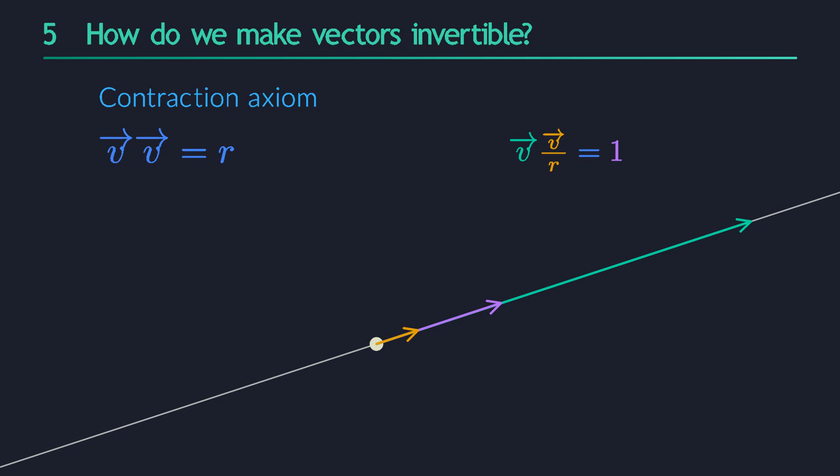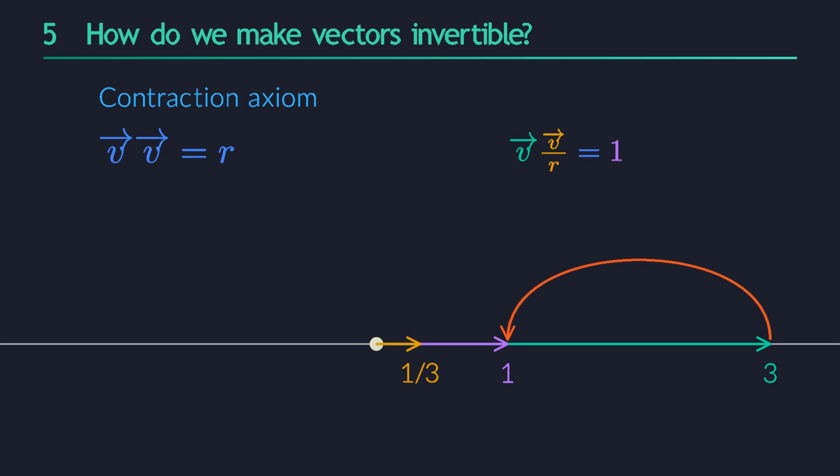But then I thought about it some more, and I realized that this behavior of inverses is actually very familiar. It's exactly how real numbers work. They also stay on a line, the real number line. The inverse of 3 is 1 over 3. If you now think of the number 3 as a one-dimensional vector that starts at the origin and runs 3 units to the right, its inverse is the same vector, but scaled down by a factor of 9.